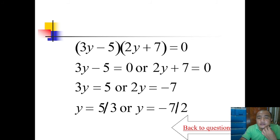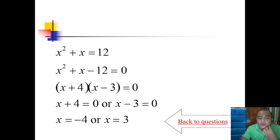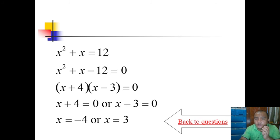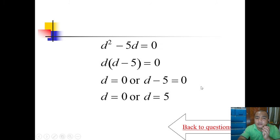Here's the solution. You can screenshot the solution here. For number 1, the solutions are 5/3 and -7/2. Number 2: solutions are -4 and positive 3. Notice that -12 factors are 4 and -3 whose sum is positive 1. And here, d is the common factor, so zero and five.